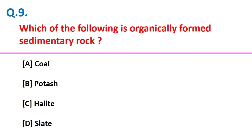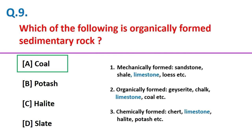Which of the following is organically formed sedimentary rock? Coal. Friends, sedimentary rock can be formed by three processes: mechanically formed sedimentary rock — examples are sandstone, shale, limestone, loess, etc.; organically formed sedimentary rock — examples are geyserite, chalk, limestone, coal, etc.; and chemically formed sedimentary rock — examples are chert, limestone, halite, potash, etc.